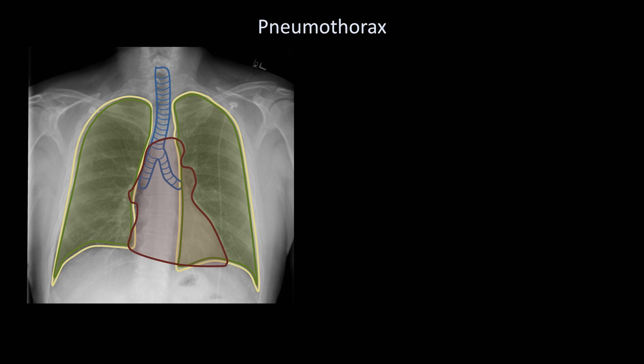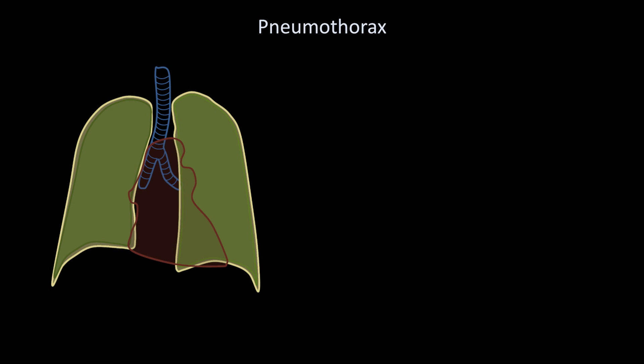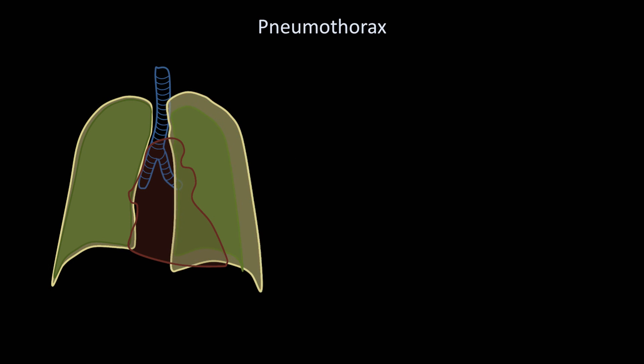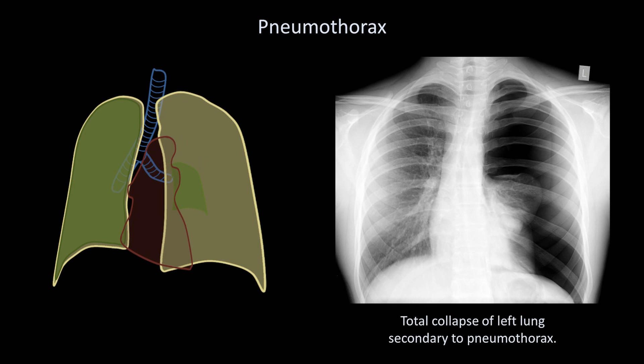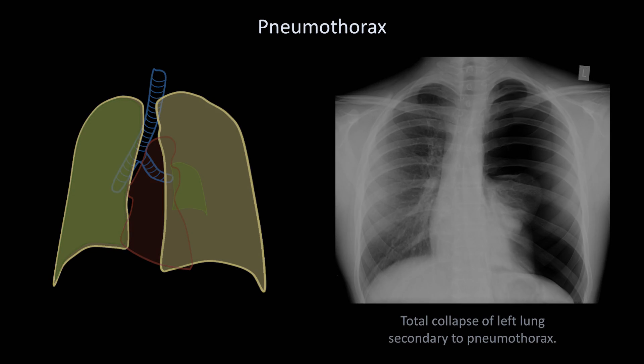I'll start with the condition of pneumothorax. A pneumothorax is when air is within the pleural space surrounding the lung. I first introduced this condition in lesson 4 on airways and bones, where I described a massive pneumothorax as a cause of airway deviation and total lung collapse. Luckily, most pneumothoraces are not that large, though of course this makes the diagnosis harder to spot.